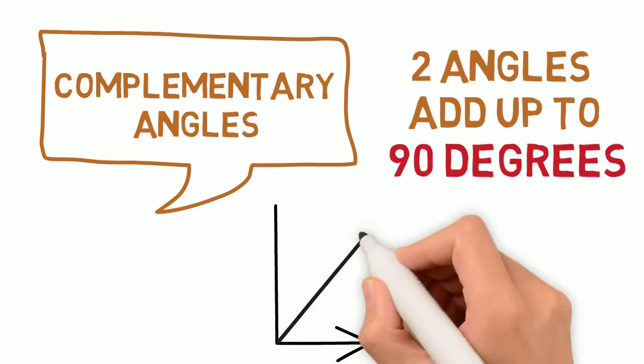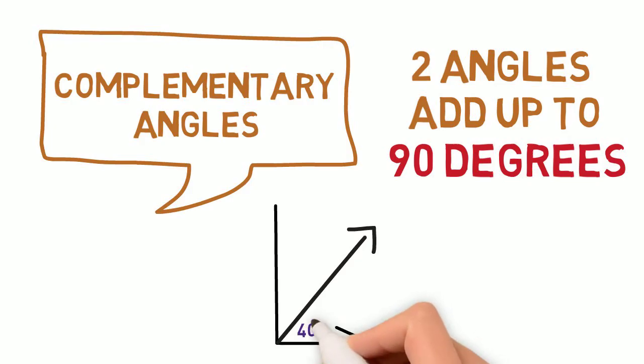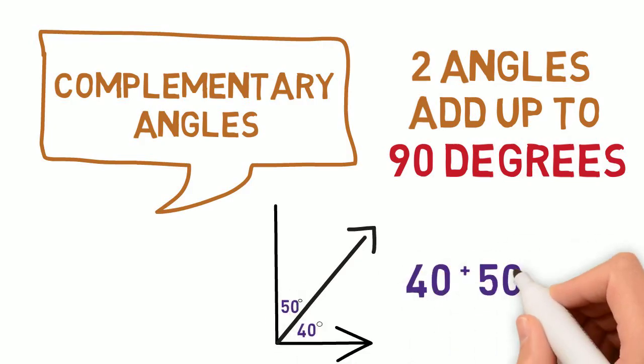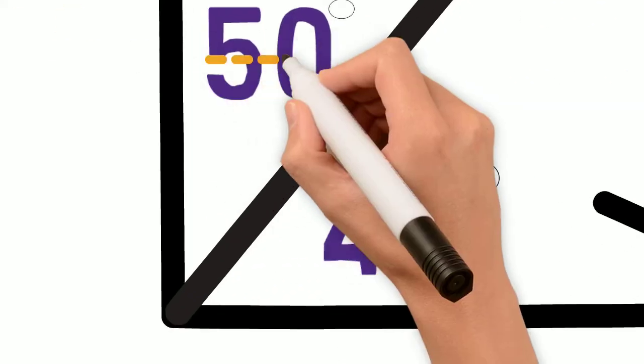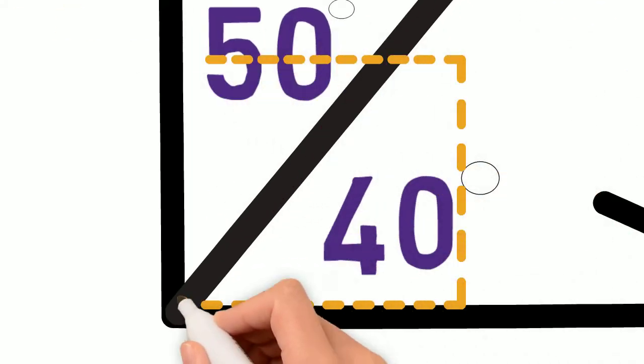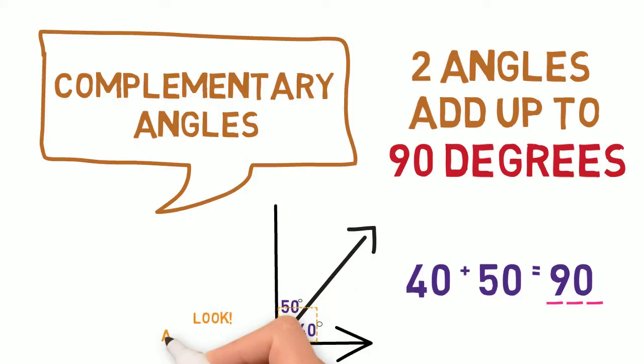Take, for example, these two angles. One is 40 degrees and the other is 50 degrees. These two create a complementary angle because they add up to make 90. Notice how when you put the two angles together, they also create a right angle, 90 degrees.